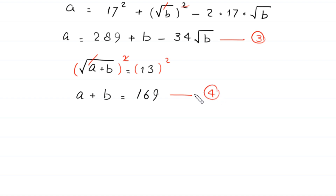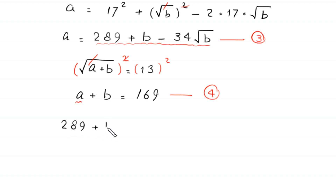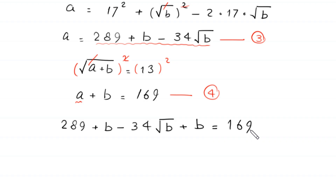Now in equation 4, we replace a with the value from equation 3: 289 plus b minus 34 times root b. This becomes 289 plus b minus 34 times root b plus b is equal to 169. We subtract 169 from both sides, and 289 minus 169 gives 120.